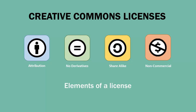The second element of Creative Commons licensing is no derivatives. When a license includes no derivatives, users are prohibited from modifying the resource. This means that the resource can only be copied and shared, and all content, including branding, must be retained.